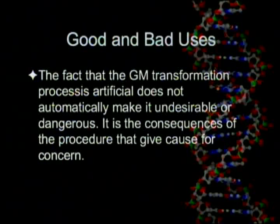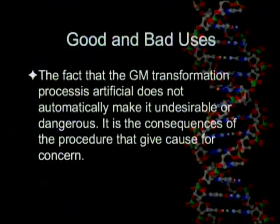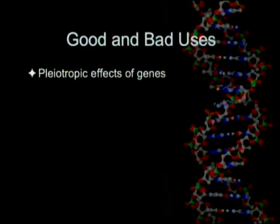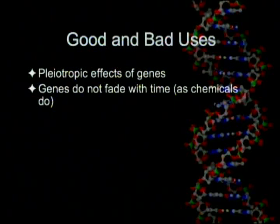This is probably the best case one can make for the non-use of genetically modified crops. The fact that the transformation process is artificial does not automatically make it undesirable or dangerous — it is the consequences that give cause for concern. There is a discussion of the pleiotropic effect of genes, meaning one gene can have multiple unexpected effects. One problem is that genes don't fade with time as chemicals do. If you spray a crop early enough, most of the chemical is gone by harvest, but if the gene is there, it keeps going.